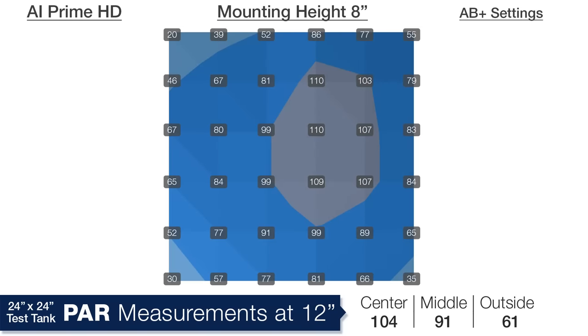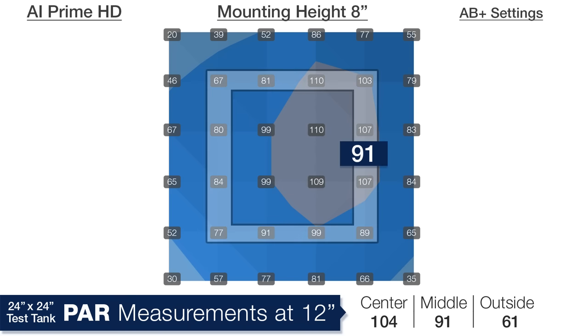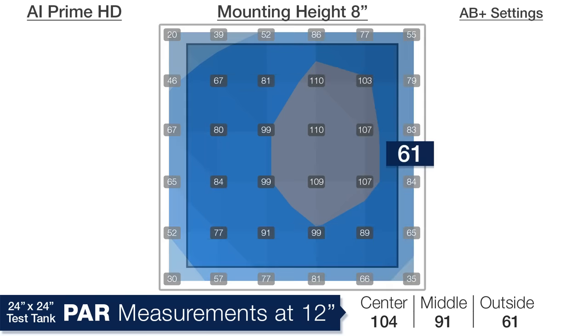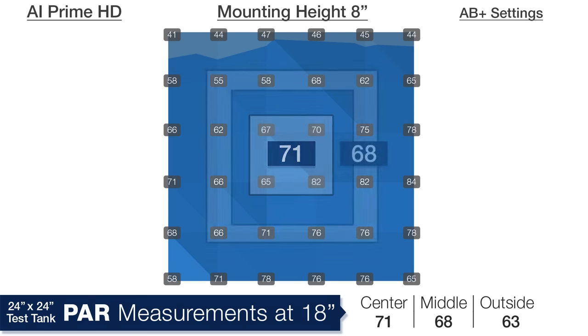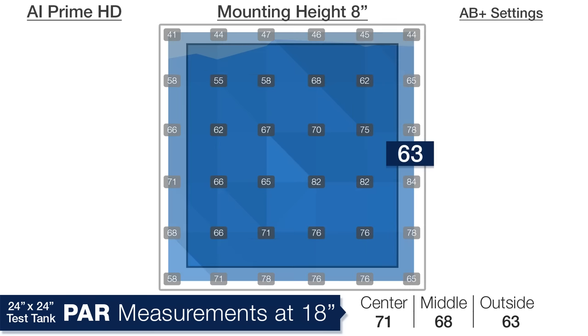Moving down to 12 inches deep there is now a center 4 inch average of 104 dropping to 91 four inches outside that and an average of 61 in the outer edges. Lastly at a depth of 18 inches in the tank that same ultra flat distribution is 71 in the center, 68 in the middle ring, and 63 in the outer ring.